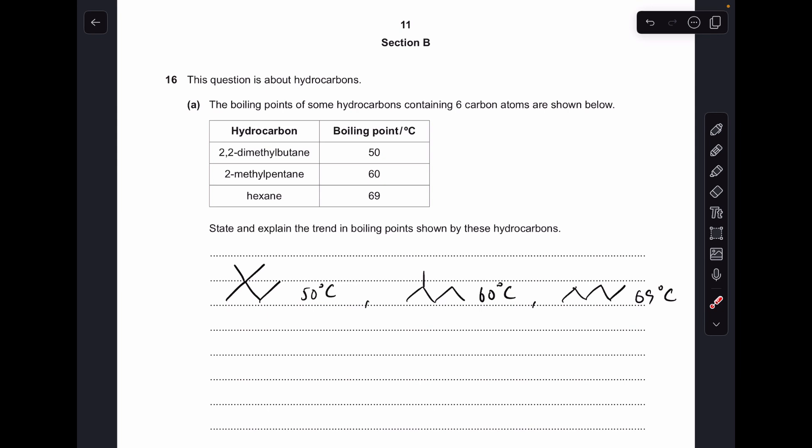I'll make a start. You can see I've already drawn up the skeletal formula of these three isomers here of C6H14. So we've got 2,2-dimethylbutane, 2-methylpentane and hexane and I've written the boiling points next to each one. So the obvious trend here is as the amount of branching increases, the boiling point decreases.